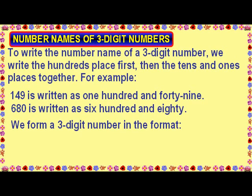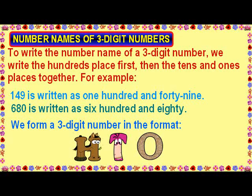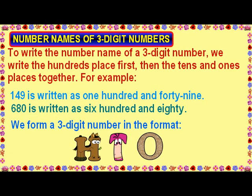Number names of three-digit numbers. To write the number name of a three-digit number, we write the hundreds place first, then the tens and ones place together. For example, the number formed with the digits 1, 4, and 9 is written as 149. The number formed with the digits 6, 8, and 0 is written as 680. We form the three-digit number in the format H-T-O, wherein H stands for the hundreds place, T stands for the tens place, and O stands for the ones place.